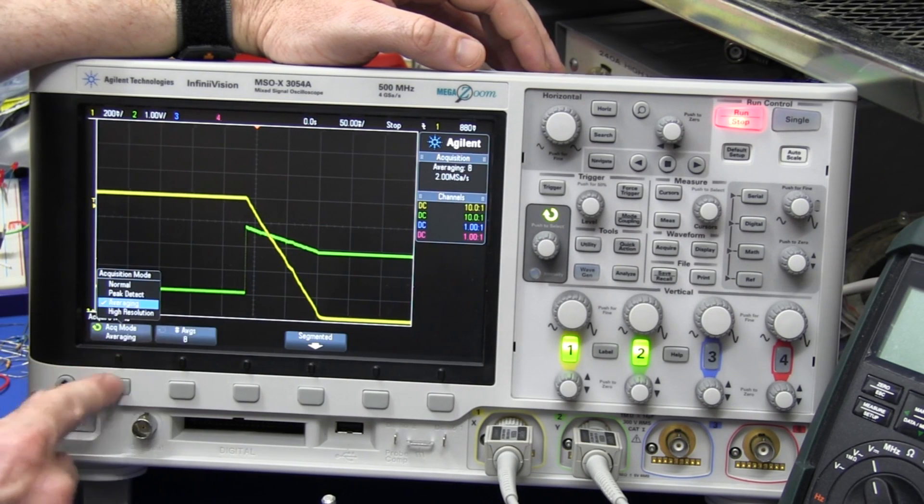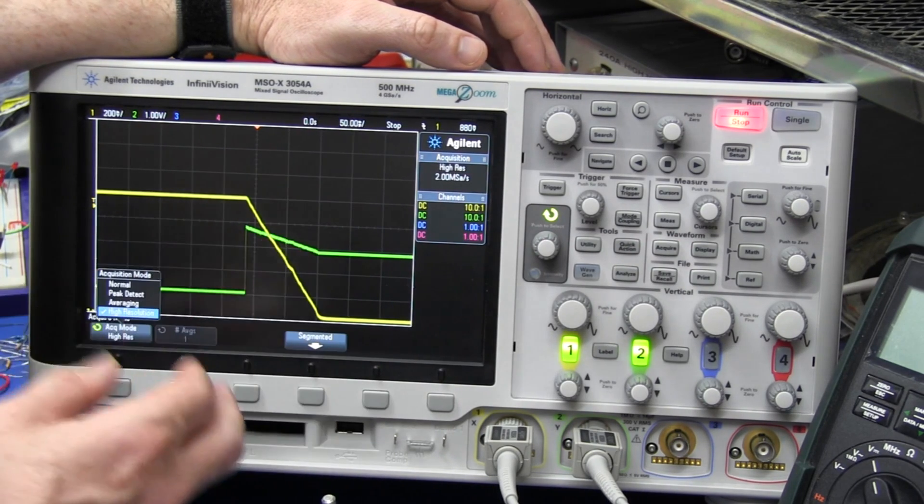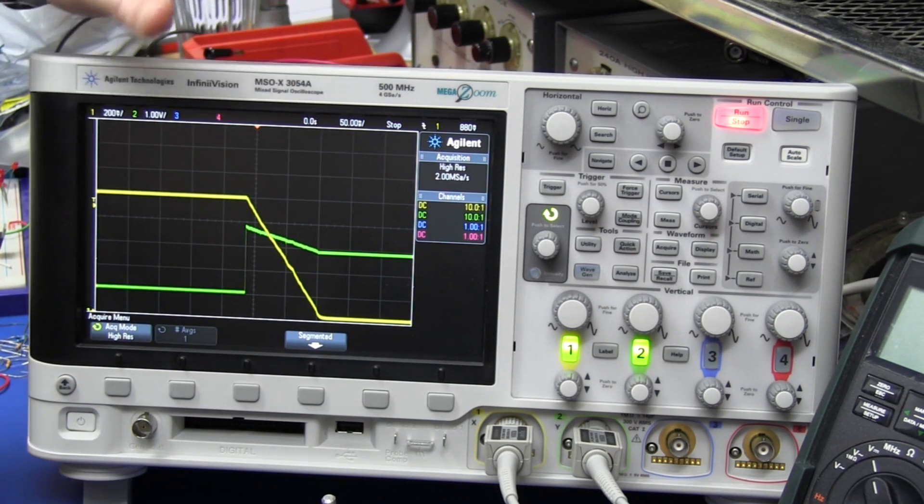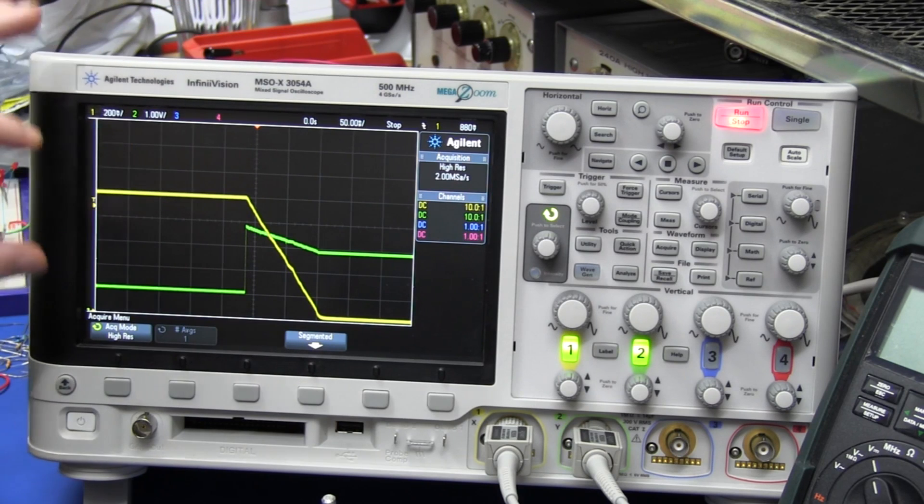The high resolution mode actually does some high order averaging of the bits to give you a lower noise floor, and it can really work out quite well. I might show an example of that.